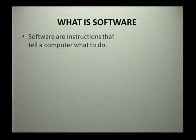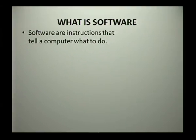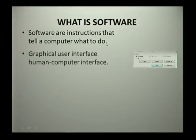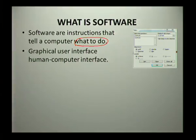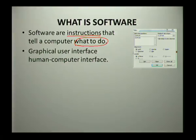So let's look into the software. What is software? Software are instructions that tell your computer what to do. Without the software, your computer would actually not know what to do. This software will allow your computer to do what it is meant to do by following these instructions, which come in the form of a program.